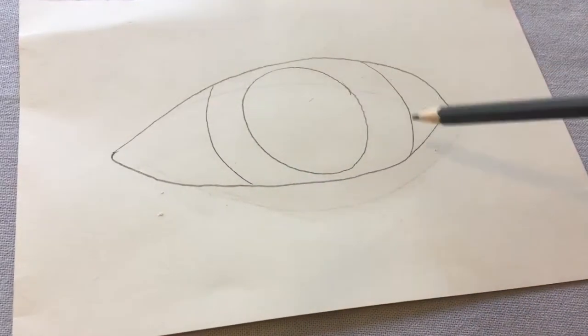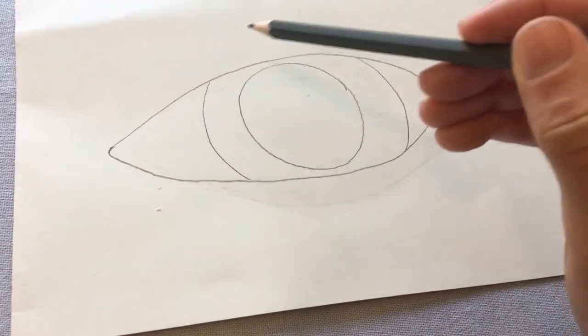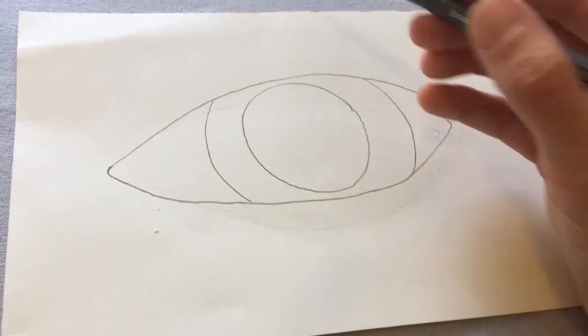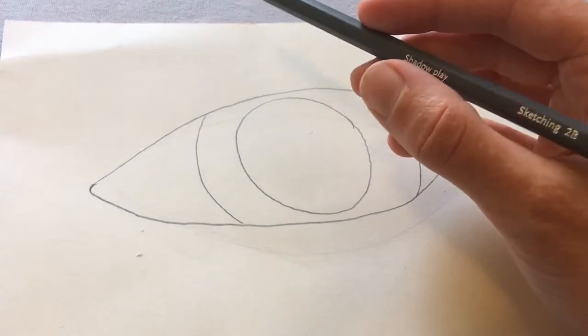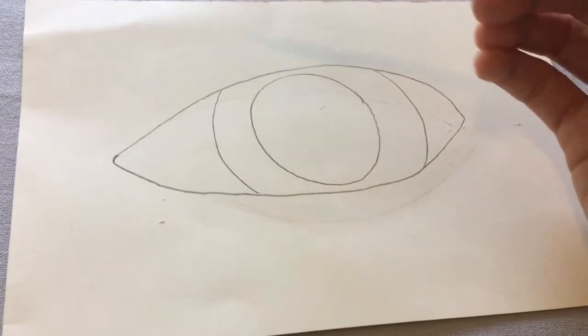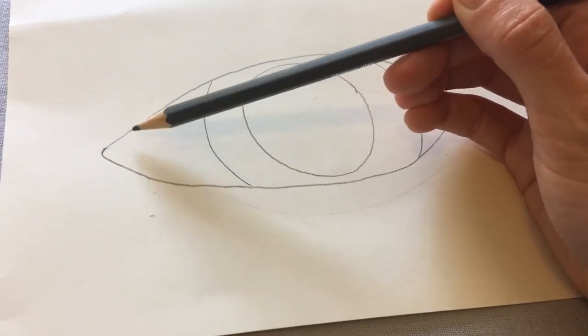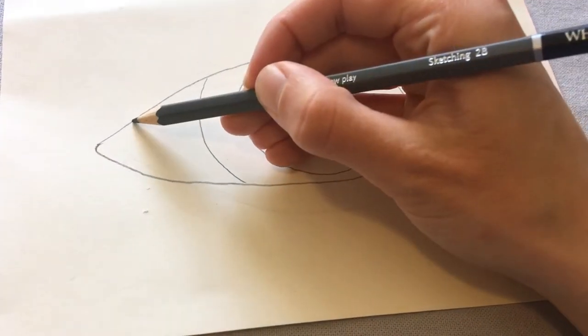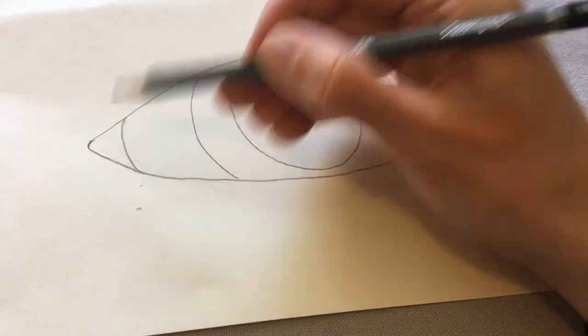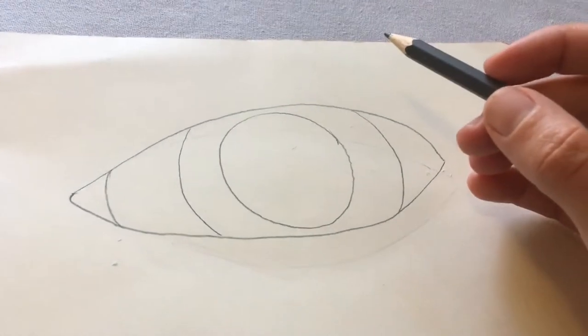If you do those two lines there, then we can imagine that the iris is carrying on behind your eyelids. And then I'm going to look at any of the other details I can see in my eye. In the corner of the eye I can see a little pink bit of skin, where you have the edge of my eyeball and the inside of the eye.